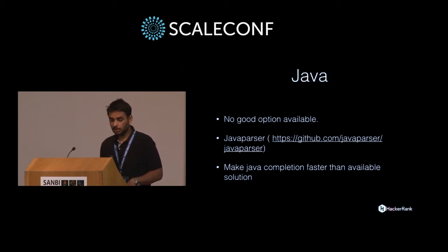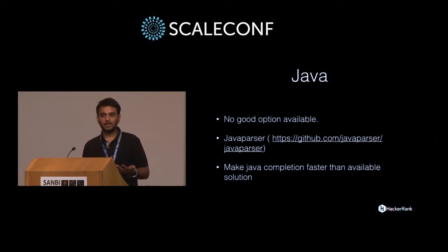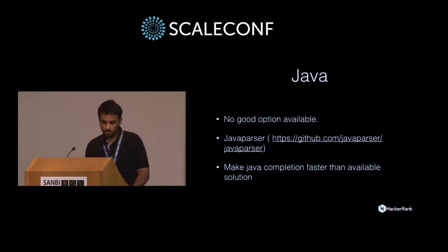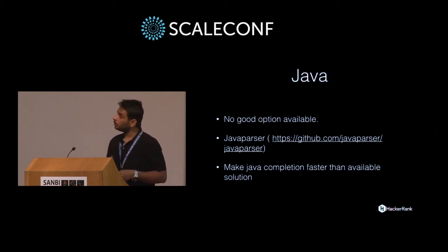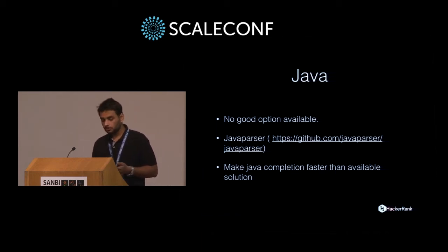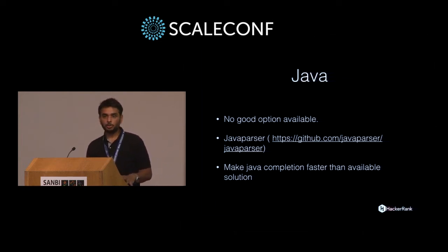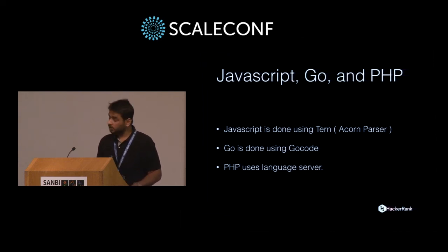For Java — in open source there aren't really good options available. There's Acclim, some old Vim Java complete which is very slow, and no good open-source Java completion available on GitHub. What we did is use JavaParser, which parses Java 1.7 and 1.8 ASTs, and we built our own implementation on top of that to make our Java completion run faster.